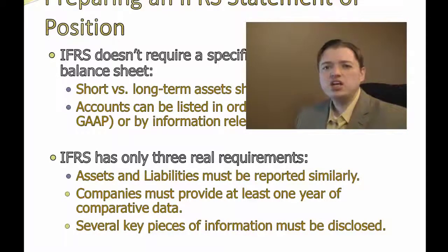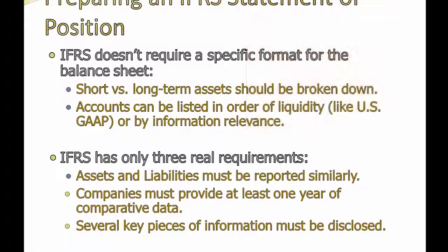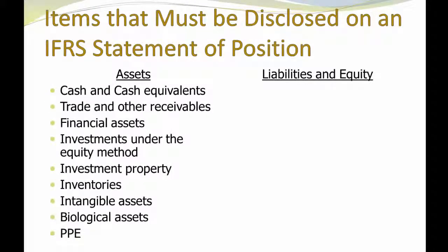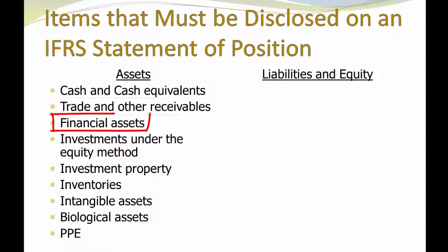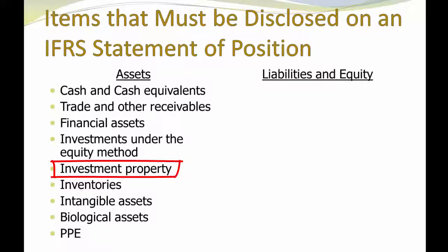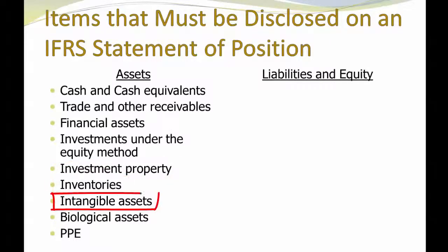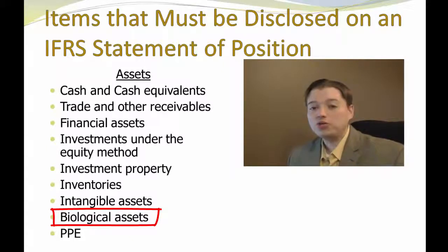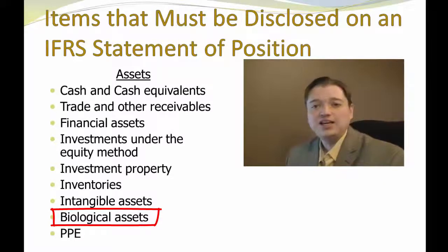Third, there are certain key pieces of information that have to be included. If you have them, you have to show your cash, cash equivalents, trade and other receivables — basically accounts receivable and loans receivable. Financial assets such as stocks and bonds that you own. Anything purchased under the equity method — basically subsidiaries your company owns. Investment property, which is a long-term investment under US GAAP. Your inventory amounts, your intangible assets. One interesting item is biological assets: under IFRS you have to break out living things, so if you own cows, trees, fish, or anything else that's alive, it gets its own category called biological assets and is depreciated differently. And finally, we need a PP&E number.